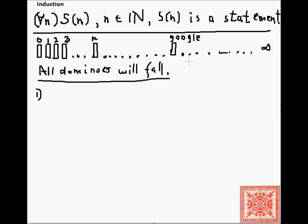First of all, I would like to, in this case, our s is the same as domino n, domino number n falls. And I would like to convince you that s is true for all n, from 0 up to infinity.